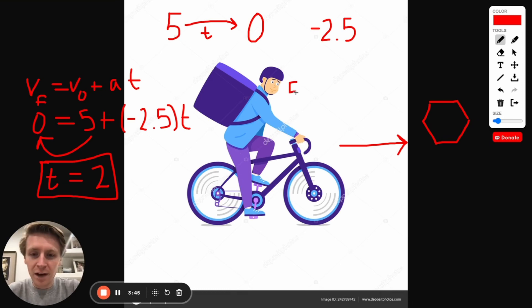If we know that he's traveling at five meters per second and that every second he gets 2.5 meters per second slower, if that's his acceleration, well, after one second, if he's 2.5 meters per second slower, his new speed is 2.5 meters per second. Then after a second second, still slowing down at that same rate, 2.5 minus 2.5, that's zero.